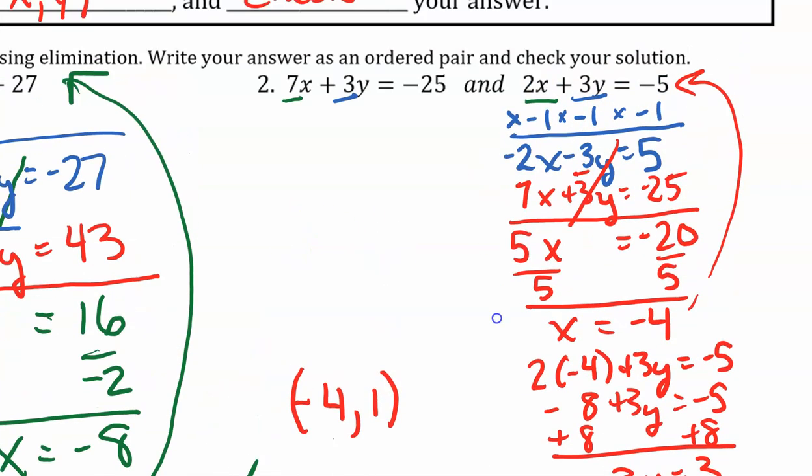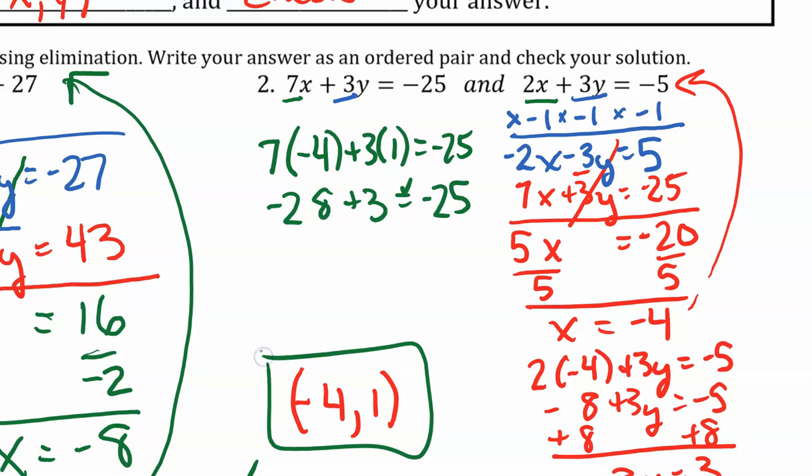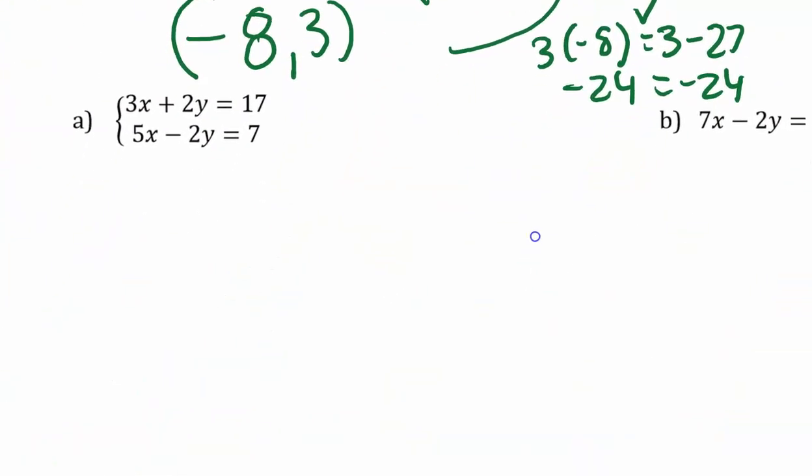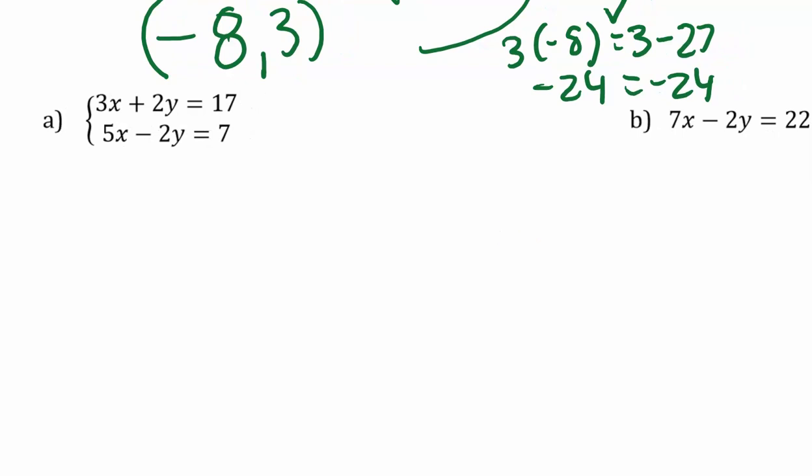And now I'm going to do my check. So 7 times negative 4 plus 3 times 1 should equal negative 25. 7 times negative 4 is negative 28. And negative 28 plus 3 does equal negative 25. Now pause the video and try A on your own.